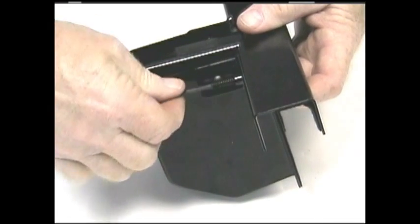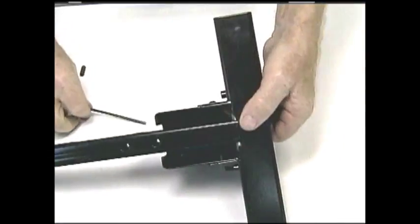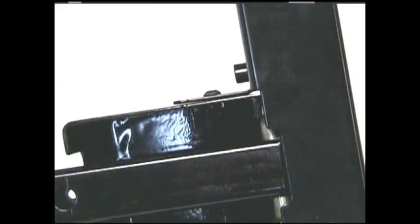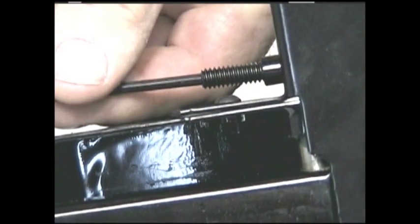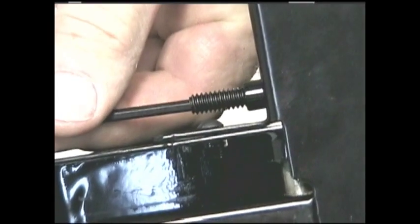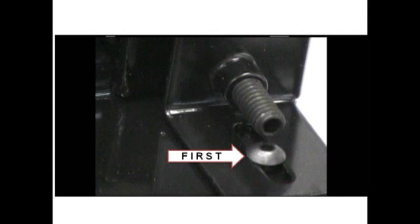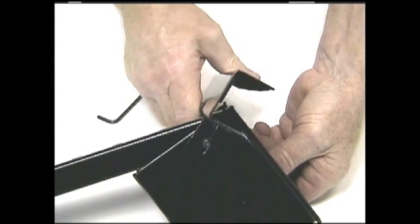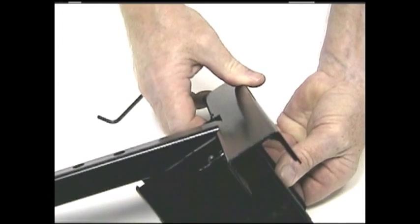Now screw the socket cup's bolts as shown. They do not have to go all the way in. Make sure that the rim bracket is flush with the cylinder's box as shown.